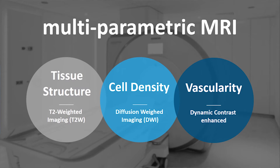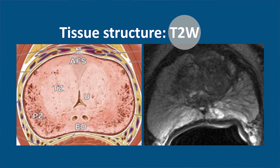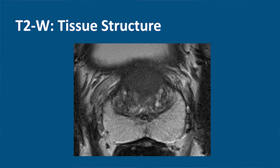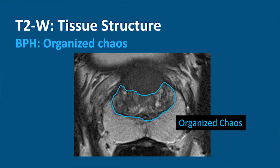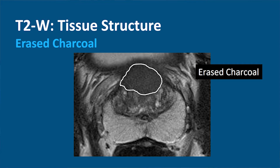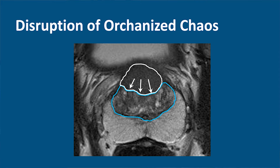With T2-weighted images, you are displaying tissue structure, so you are able to separate the peripheral zone from the transition zone. With T2, the transition zone consists of organized chaos — well-defined structures. Whereas a cancer has an erased charcoal aspect, meaning the normal structure is disrupted. There is disruption of organized chaos, so you see tissue structure.